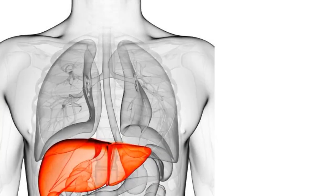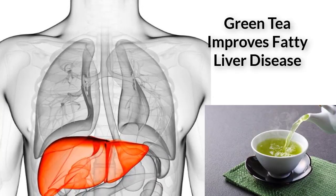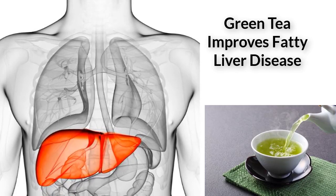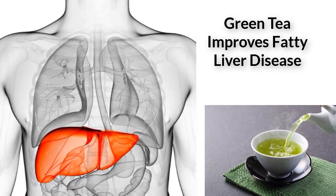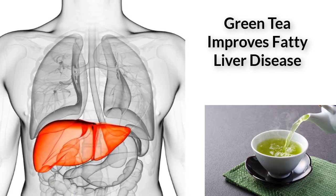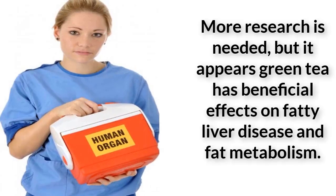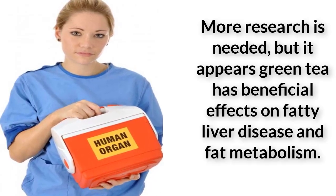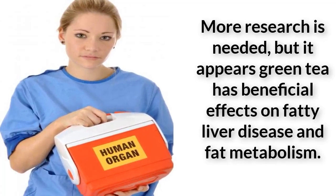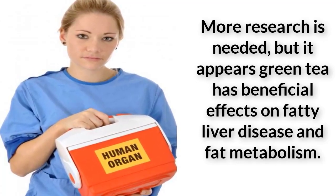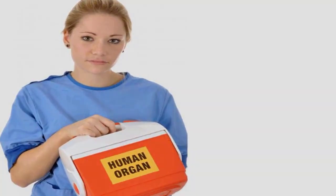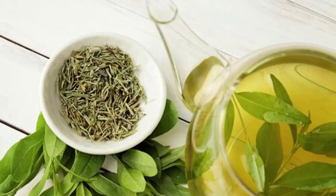Green tea improves fatty liver disease. A study published in the September 2008 issue of the Journal of Nutrition examined the effects of EGCG on fatty liver symptoms in high-fat-fed mice. Mice were treated with EGCG for four weeks. The study concluded that EGCG treatment helps to reverse fatty liver disease and helps to reduce inflammation. Another group of mice treated for 16 weeks had even more benefits, with reduced body weight gain and fat percentage. More research is needed, but it appears green tea has beneficial effects on fatty liver disease and fat metabolism.